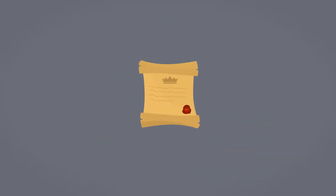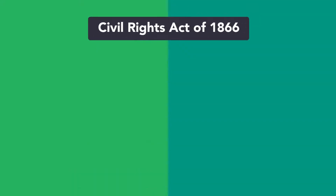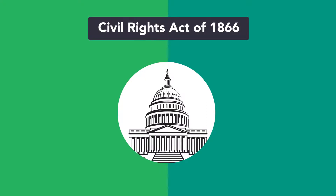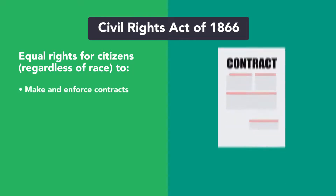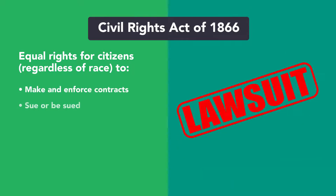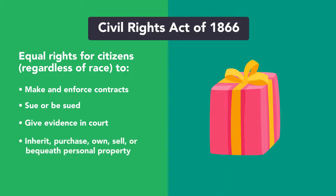Civil rights legislation dates to the post-Civil War Reconstruction Era when Congress first prohibited discriminatory conduct by private parties. The Civil Rights Act of 1866, the first major civil rights law Congress ever passed, guaranteed equal rights to citizens regardless of race or color to make and enforce contracts, to sue or be sued, to give evidence in court, to inherit, purchase, own, sell, or bequeath real and personal property.